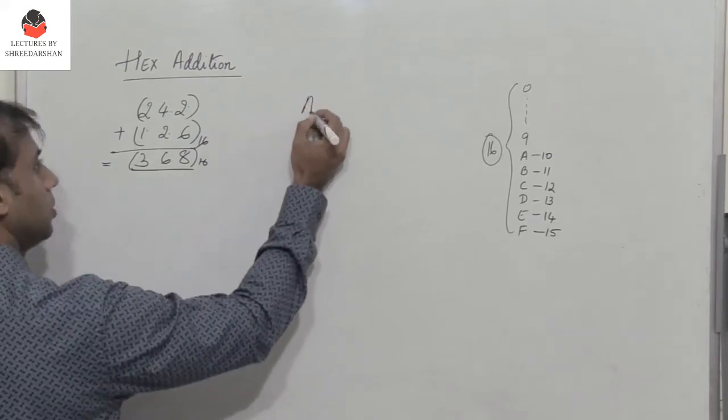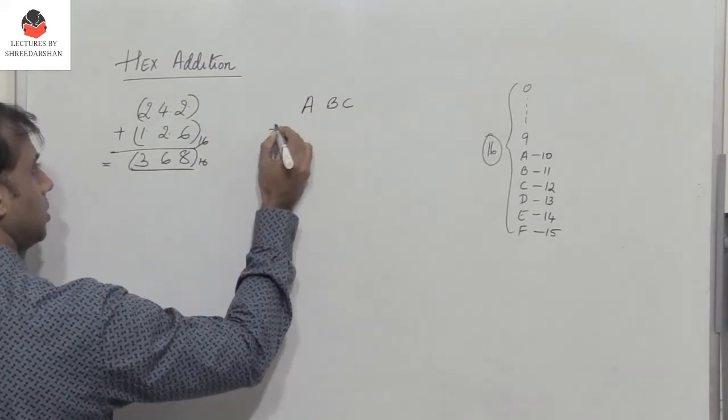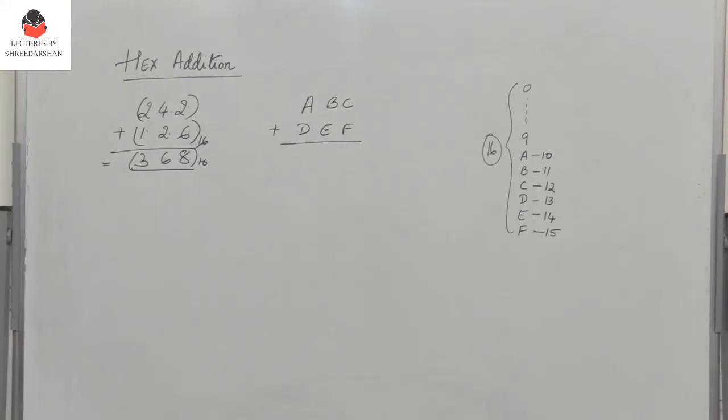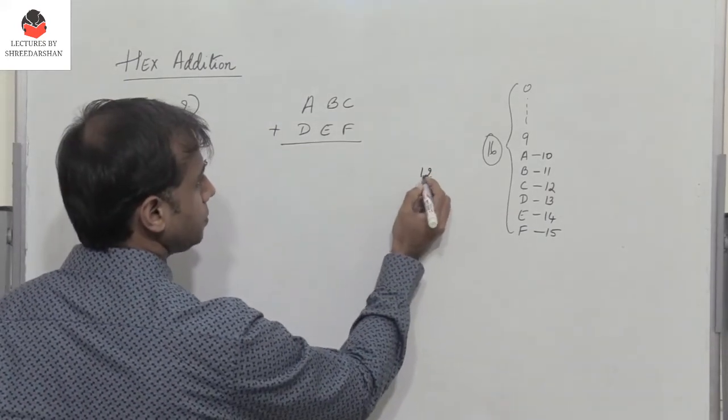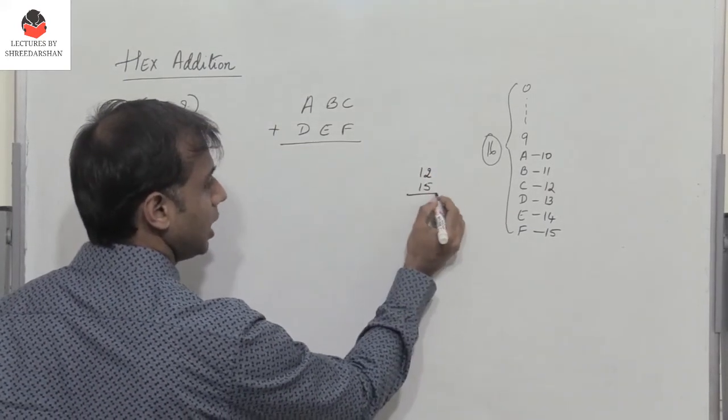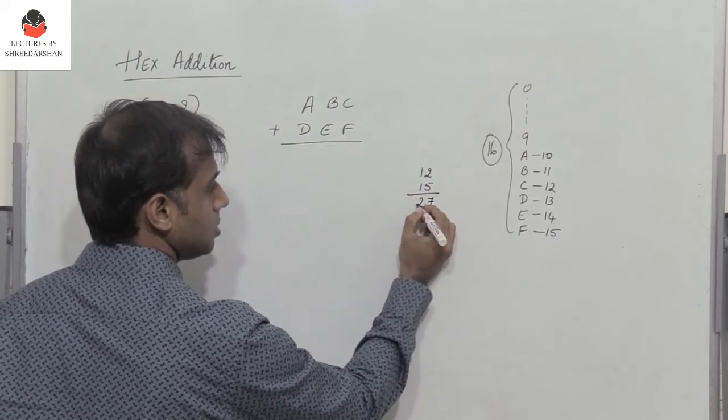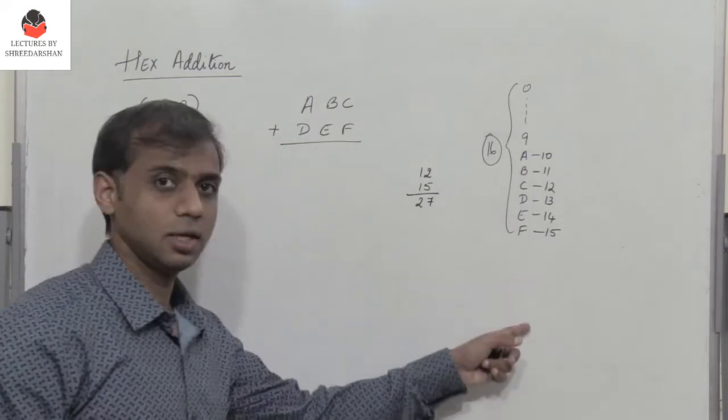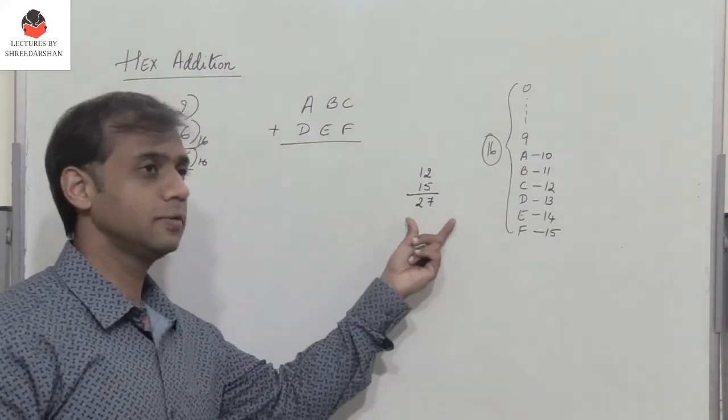Now for the second example, ABC plus DEF. First, I need to perform C plus F. What is C? C is 12 and F is 15, so when I add both of them I get 27. Now this number 27 is greater than 15, so I have to convert 27 to hex.